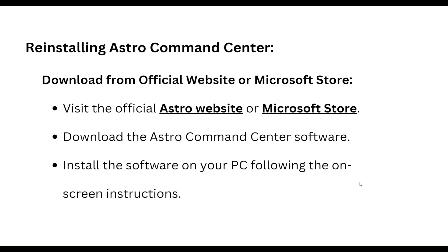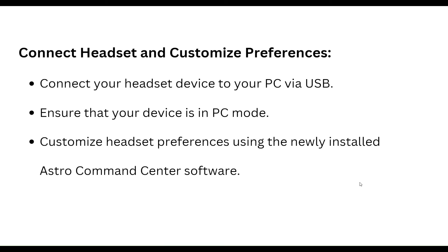To reinstall Astro Command Center, visit the official Astro website or Microsoft Store and download the Astro Command Center software. Install the software on your PC following the on-screen instructions. Then connect your headset to your PC via USB, ensure that your device is on PC mode, and customize headset preferences using the newly installed Astro Command Center software.